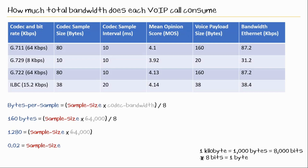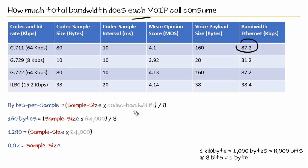So sometimes we have to determine how much bandwidth does each call consume, and often I would see this value and wonder how did they get there. So let's figure it out. The equation is: bytes per sample equals sample size times codec bandwidth divided by 8.